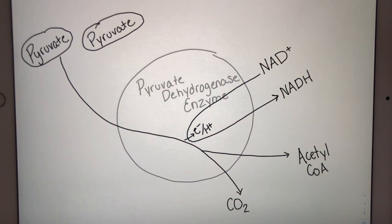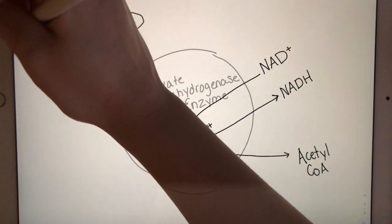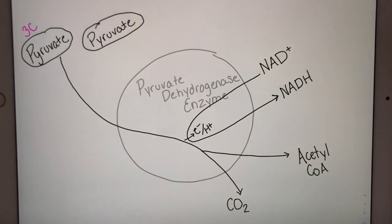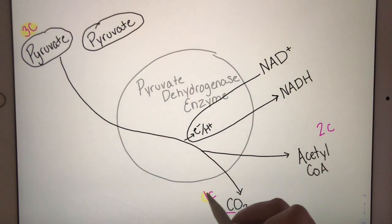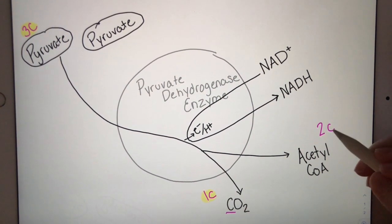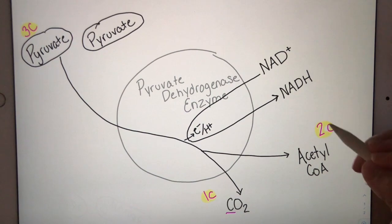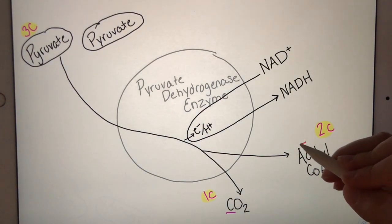So like we did for glycolysis, let's count our carbon molecules, keep track of those carbons. So pyruvate is going to have three carbons. So our three-carbon pyruvate lost one carbon to the waste gas CO2. But the rest of the carbons, those last two carbons, are kept in the product, which is acetyl-CoA.